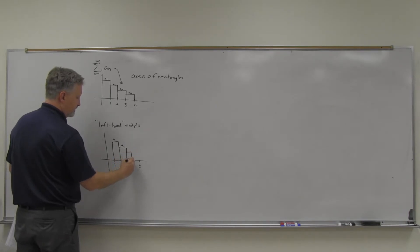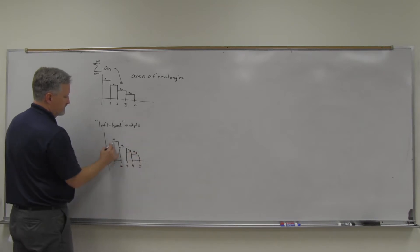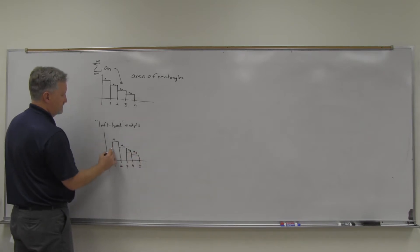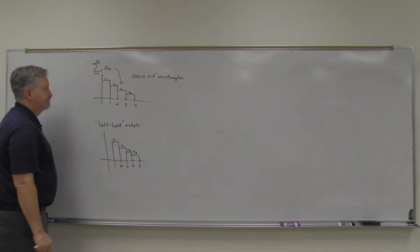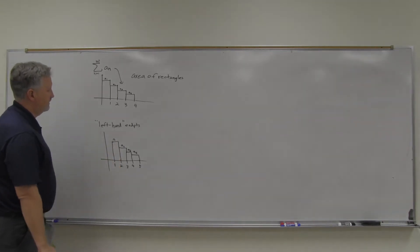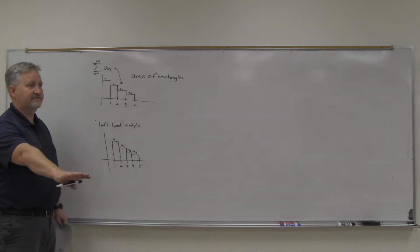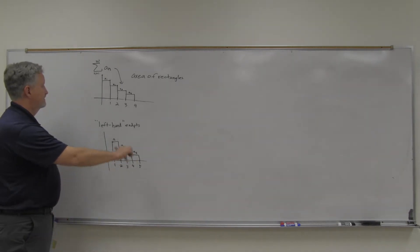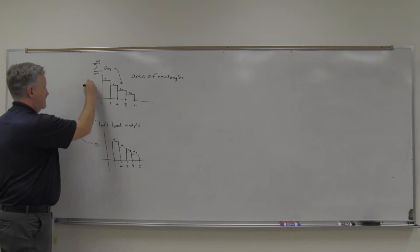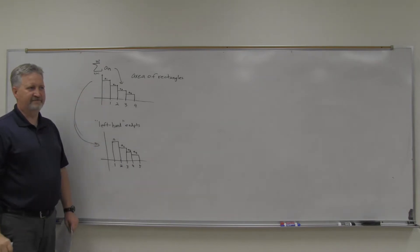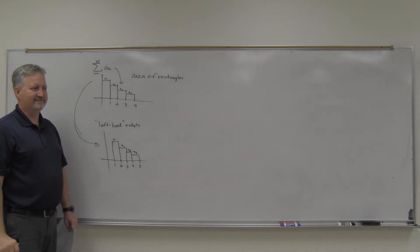So a3 would be over here, a4 — just kind of using the left-hand endpoints, the heights made by left-hand endpoints. But you get the same series. So that would be another version of that series — same series.